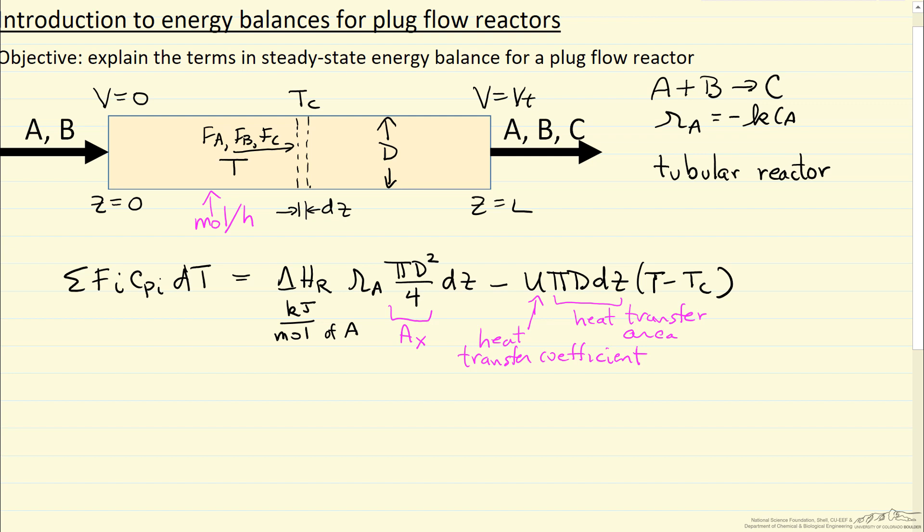So we're going to divide through, divide the equation through by AX times dz. Let me pause and do that division. I also made the substitution of rate of reaction. Notice these cancel and one of the D's cancel. Now we have an energy balance.